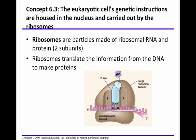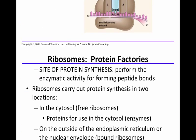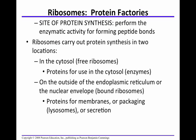Let's learn a little bit more about these ribosomes. These ribosomes are the site of protein synthesis. They're made of ribosomal RNA and two subunits — a large and a small. This information will be vital towards the end of the semester where we begin to talk about DNA, RNA, and protein, which is the central dogma. Ribosomes translate the information from the DNA to make proteins — they're protein factories. These ribosomes perform the enzymatic activity for forming peptide bonds.